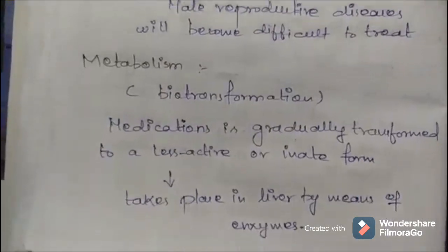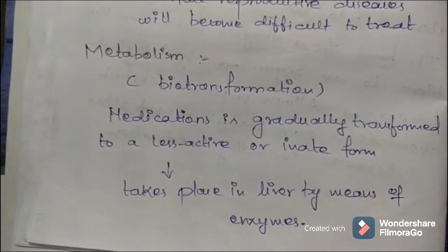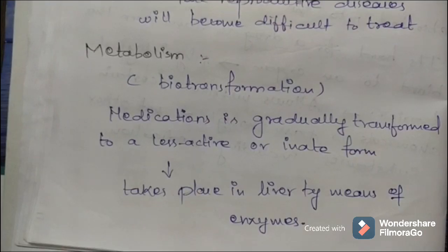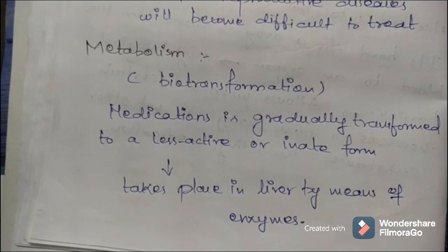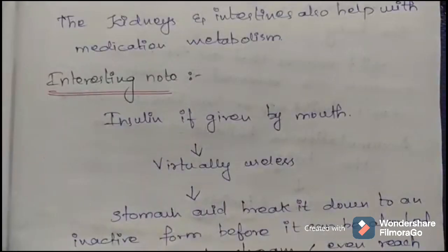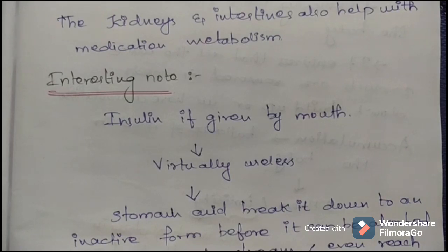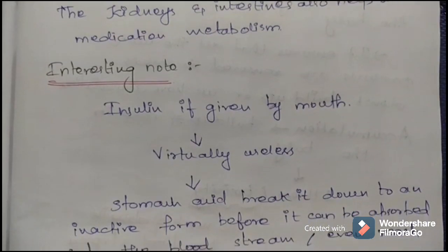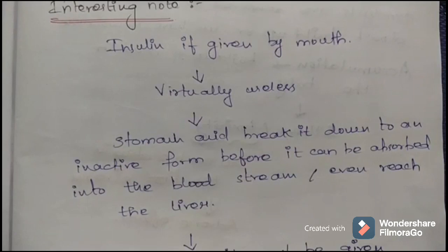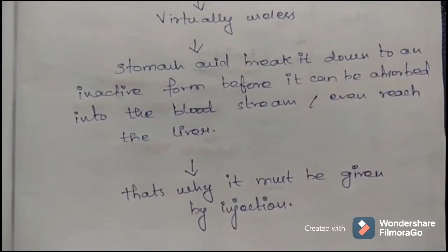The next phase in pharmacokinetics is metabolism, also termed biotransformation. Here, the medication is gradually transformed into a lesser active or inactive form. This process takes place mainly in the liver by means of enzymes, with the kidney and intestine also involved. An interesting note: insulin must be given by injection because if taken by mouth, the stomach acid breaks it down to an inactive form before it can be absorbed into the bloodstream or even reach the liver.